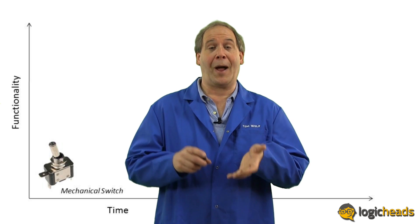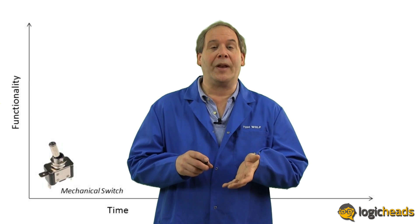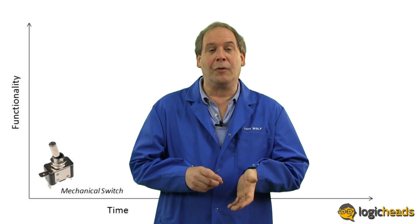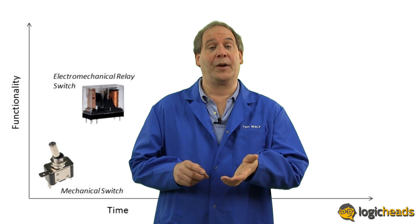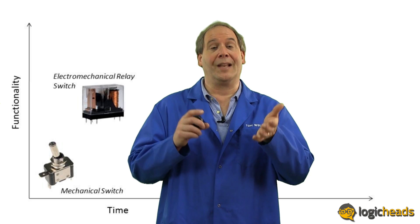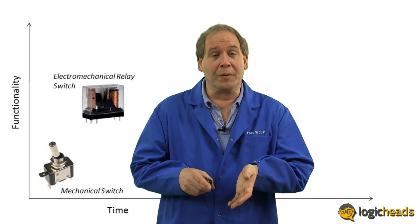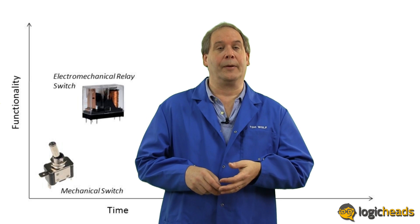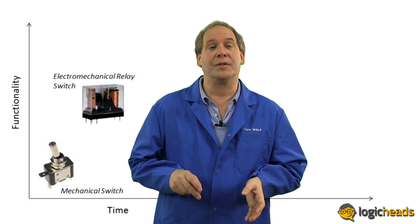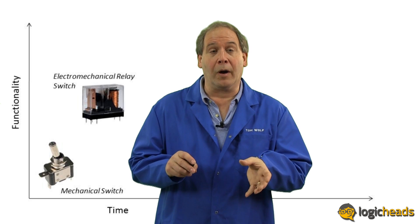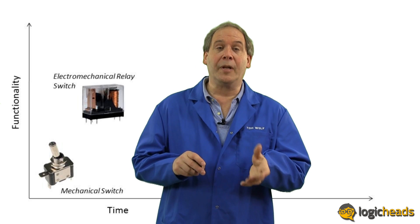Since a computer doesn't have a proper finger, there was a need to create a device which allowed an electrical force to close the switch. This is known as the electromechanical relay, which converts the electricity to magnetism to pull the switch contacts together. Relays are great and they're still used extensively in industrial applications, but they can be rather large and noisy and they have a limited lifetime.